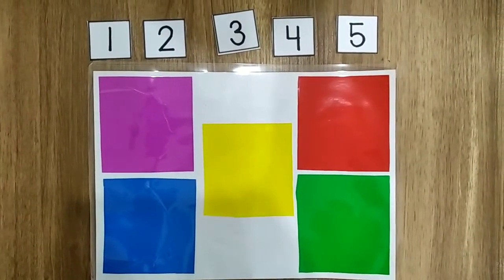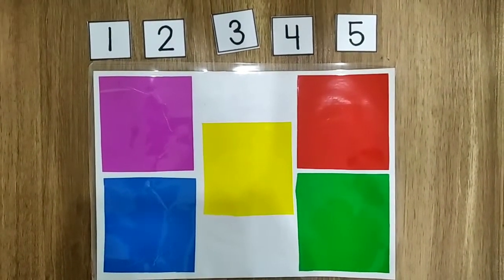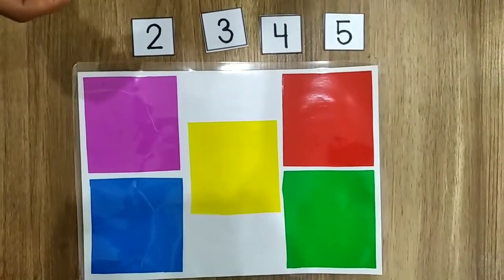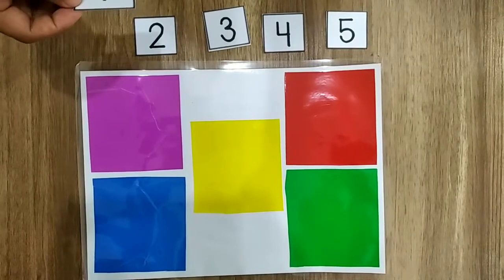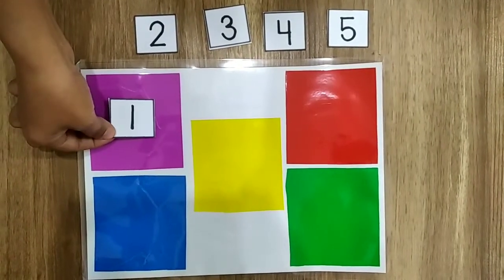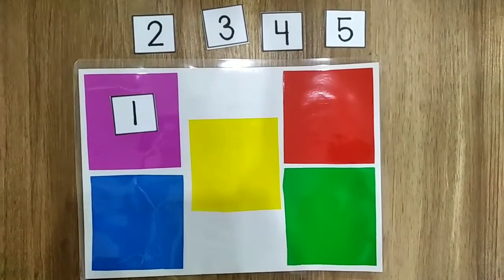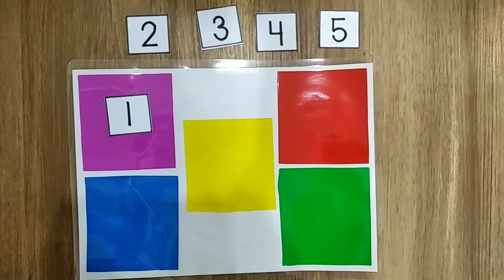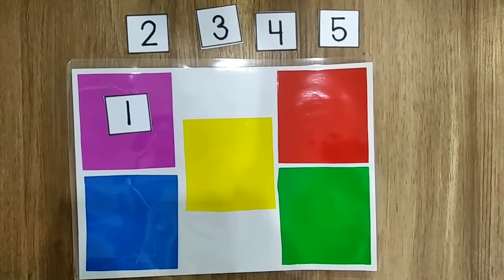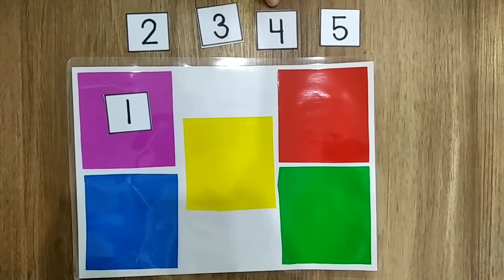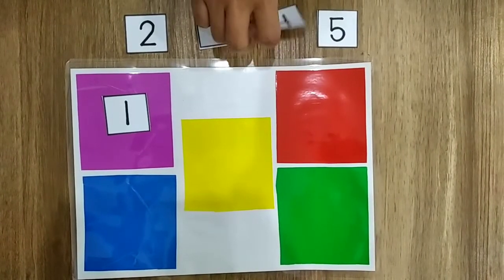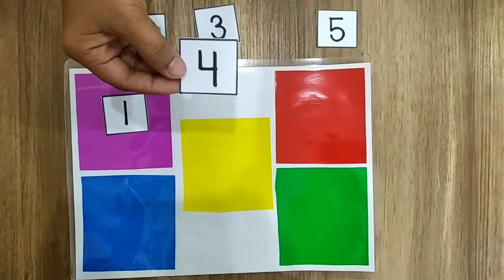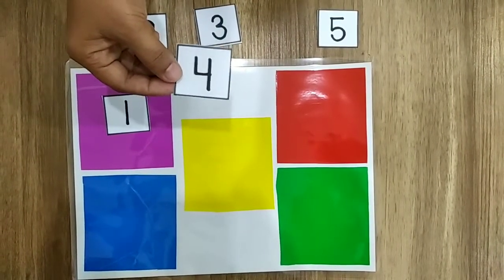Listen to the instructions. Take number one and put it on the purple square. Now take number four. Where is number four? Number four. Put number four on the green square.